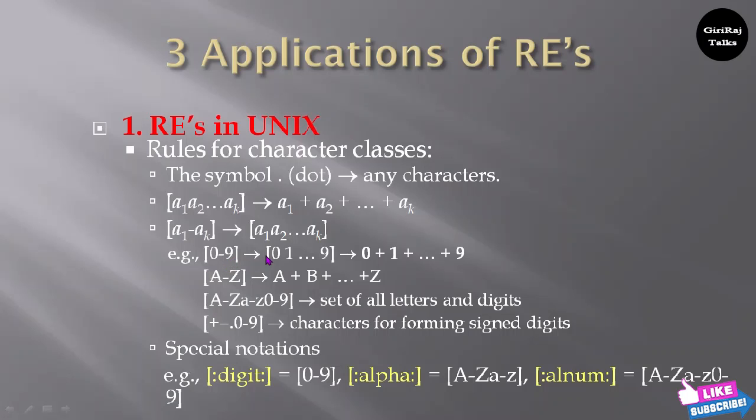For example, [0-9] you can write as 0, 1, 2, 3, 4, 5, 6, 7, 8, 9, which you can derive as 0 plus 1 plus 2 plus 3 plus 9. Capital [A-Z] you can derive as A plus B plus C up to Z. The regular expression [a-z][A-Z][0-9]